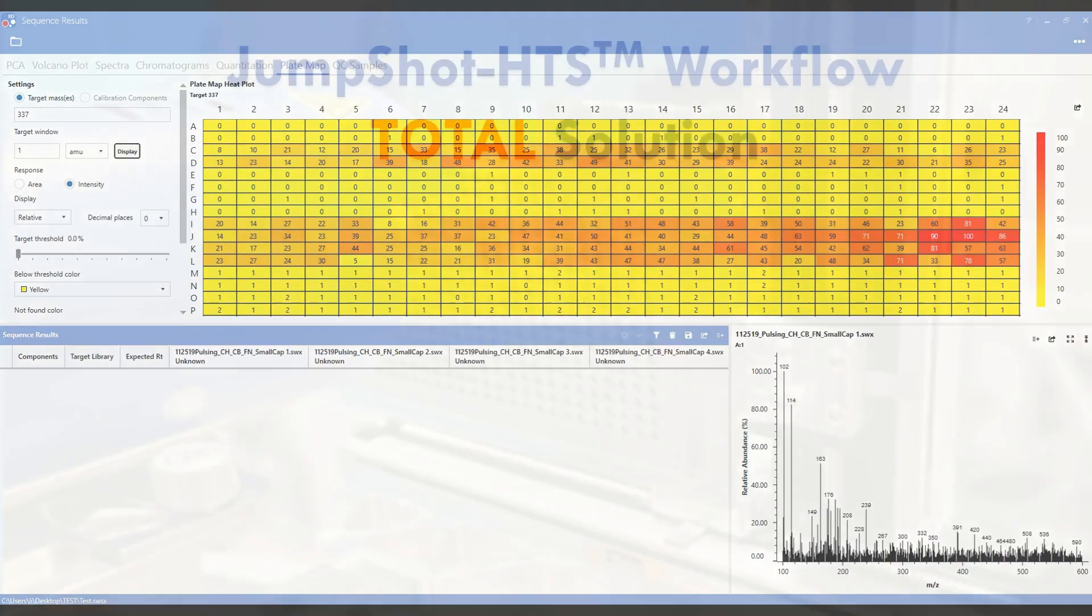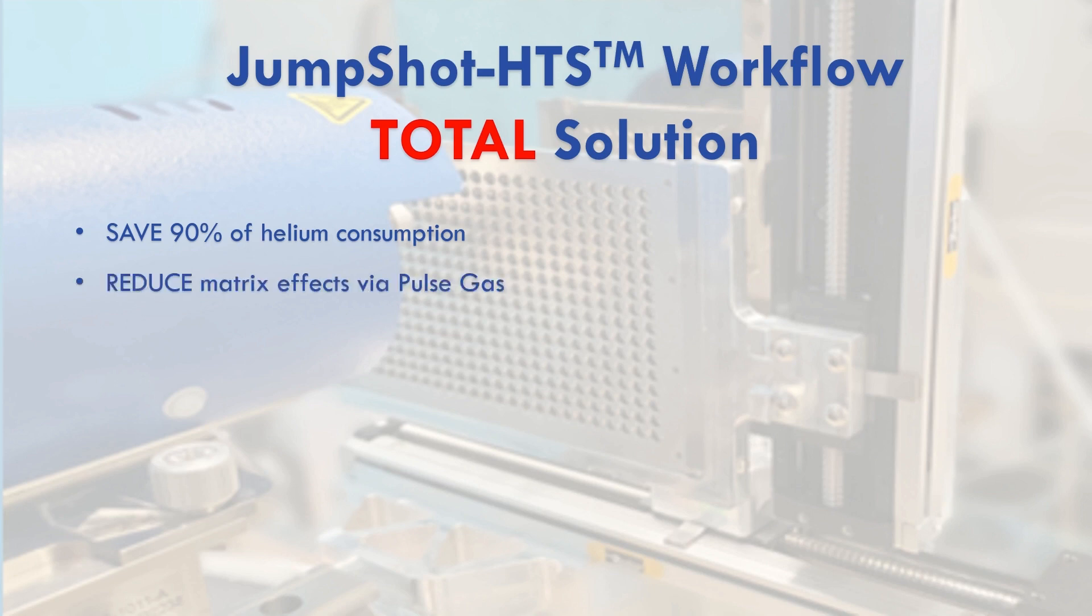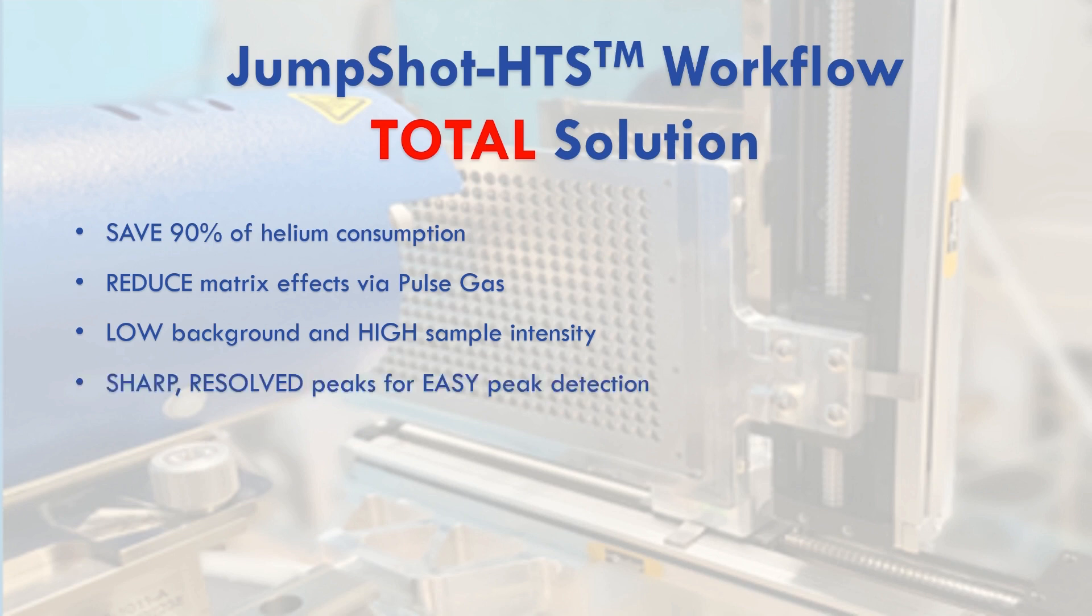Our JumpShot HTS package gives you the total solution for quick, high-throughput analysis. The Pulsed gas technology saves 90% of helium consumption. Spotting mesh screens with sub-microliter volumes of sample helps to reduce any matrix effects. Background is reduced and signal-to-noise is increased using Pulsed gas. You also get sharper-defined peaks facilitating automatic peak detection.